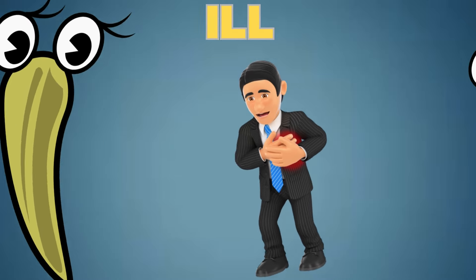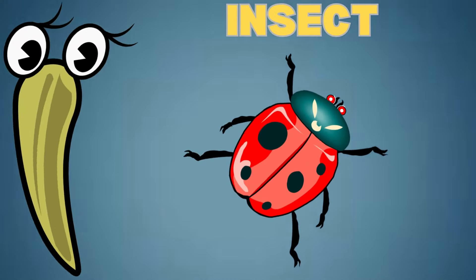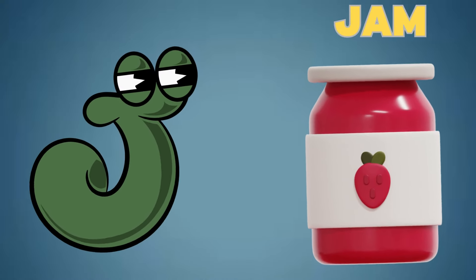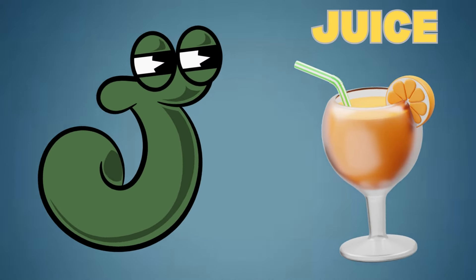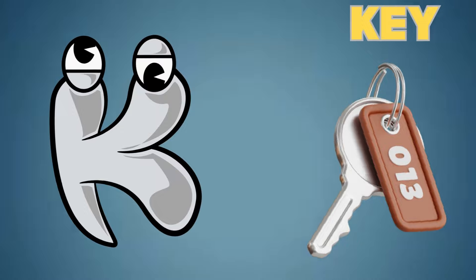I is for Ill. I is for Insect. J is for Jam. J is for Juice.